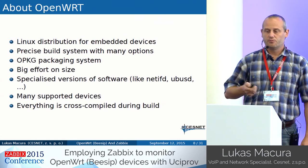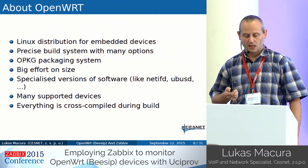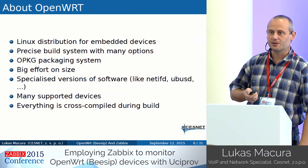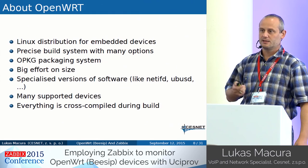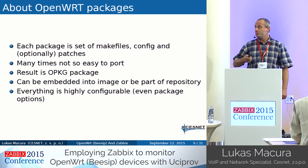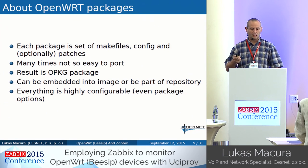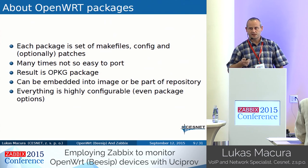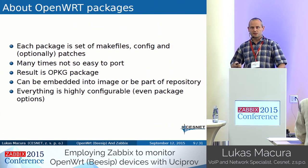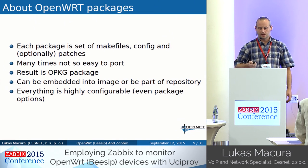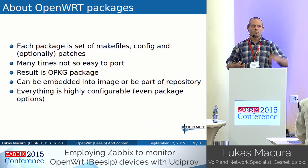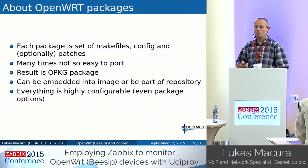Today there are really many supported devices for OpenWrt. Sometimes it's a problem to cross-compile some exotic software into that image because some software is difficult to cross-compile. An OpenWrt package is a set of makefiles, configs, and optional patches. Many times it's not so easy to port, but the result is an opkg package. During the build process you can either create a repository or embed the package directly into the image, and everything is highly configurable during the build.